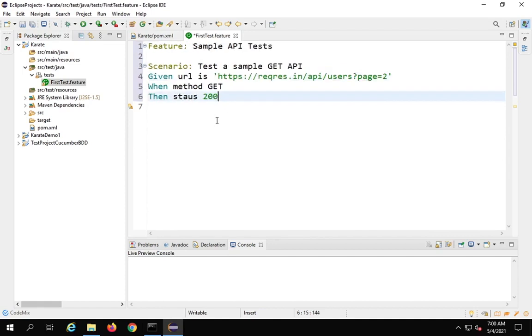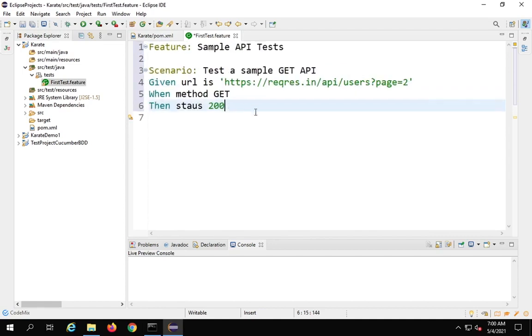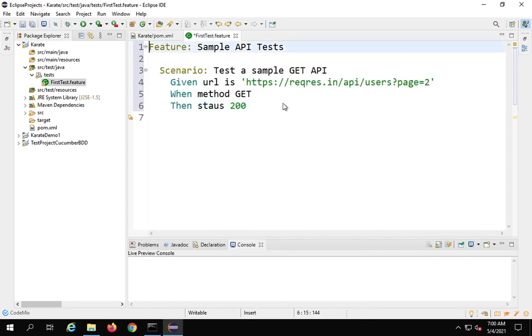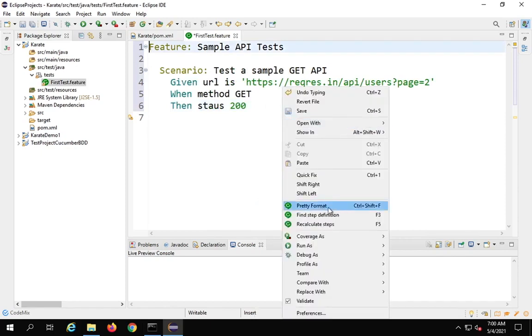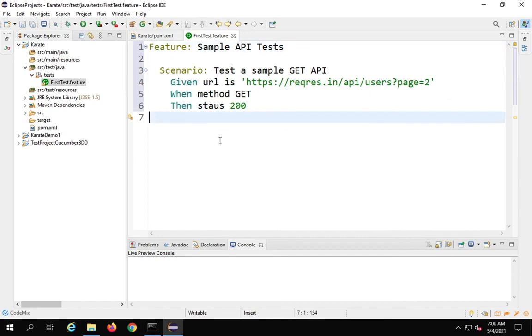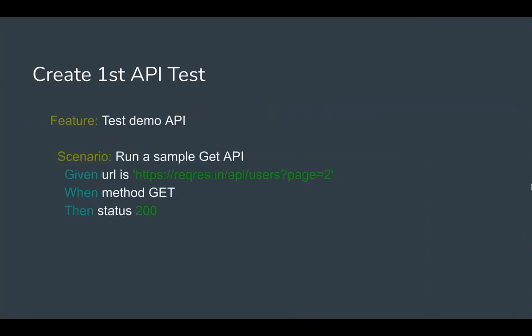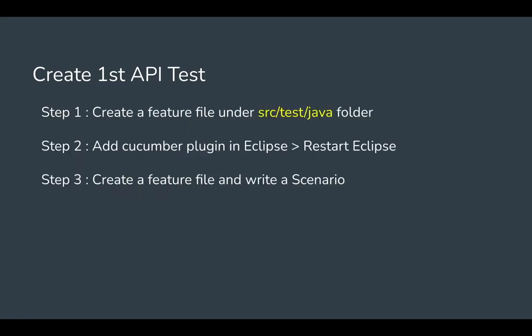I can press Ctrl+ on my keyboard to increase the font. You can also do a right-click and say 'Pretty Format' — this will correct the formatting and indentation. This option you will get only after you have added the Cucumber plugin. Save your project. This is step number three. We create a feature file, write 'Feature' with the title, create multiple scenarios with their titles, and use Given/When/Then statements to write our tests.